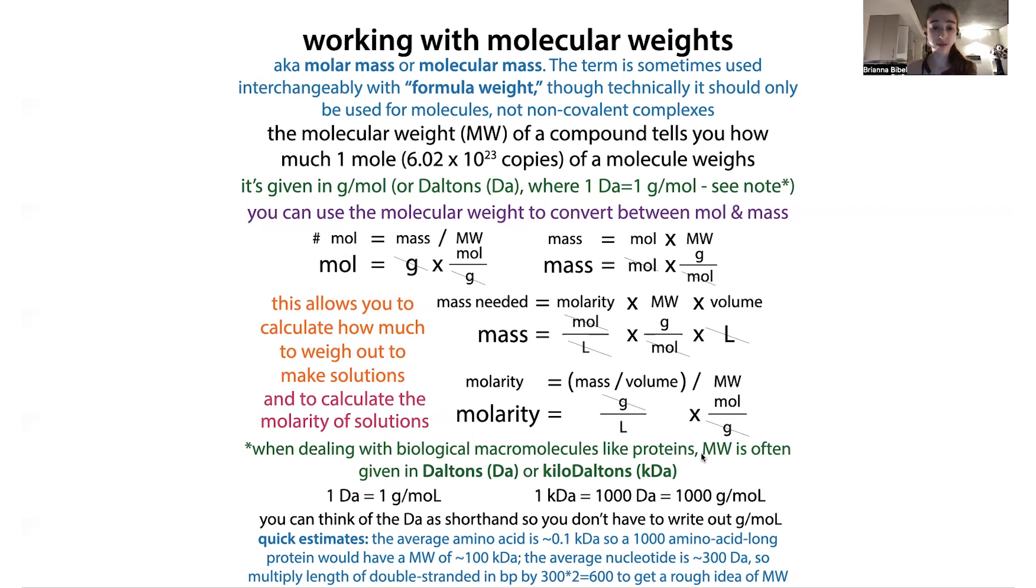Okay, and now finally for those fun facts, the quick estimates that you can do for biological molecules. So the average amino acid, so a protein letter, is about 0.1 kilodaltons.